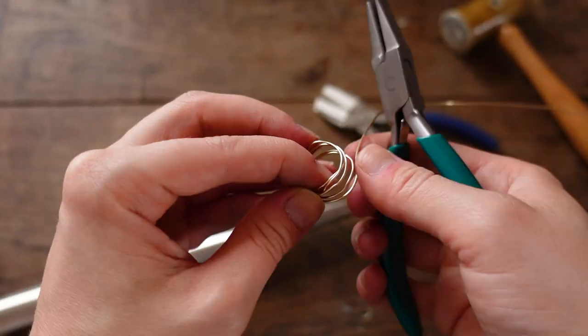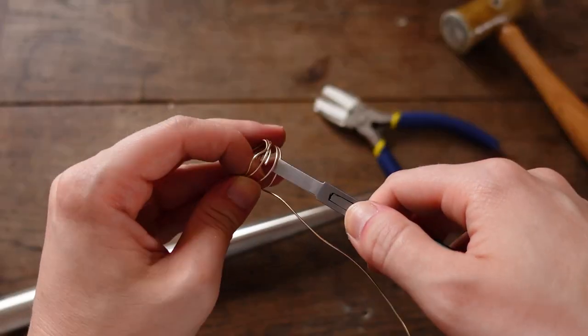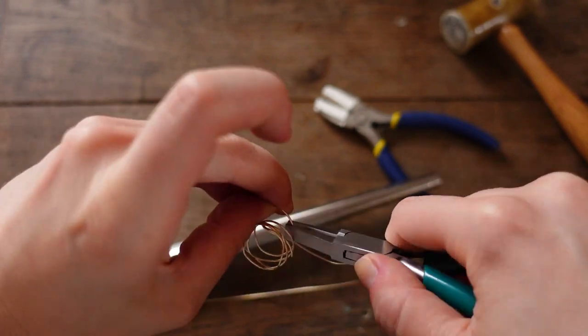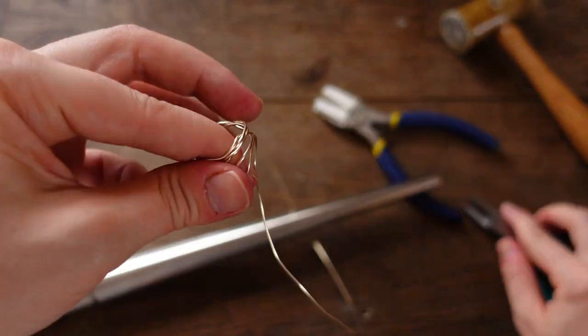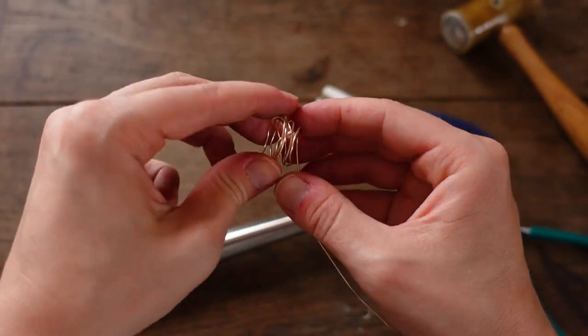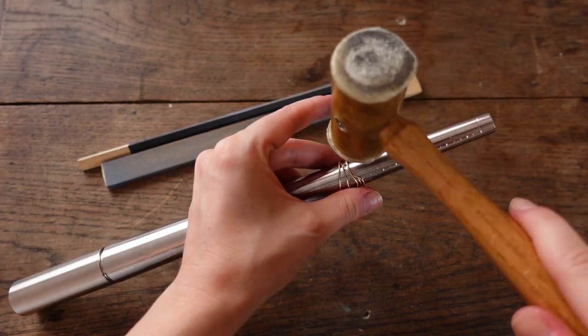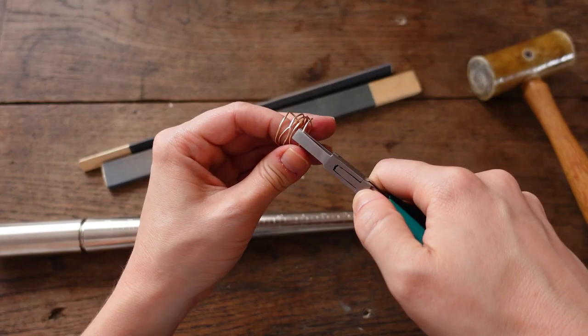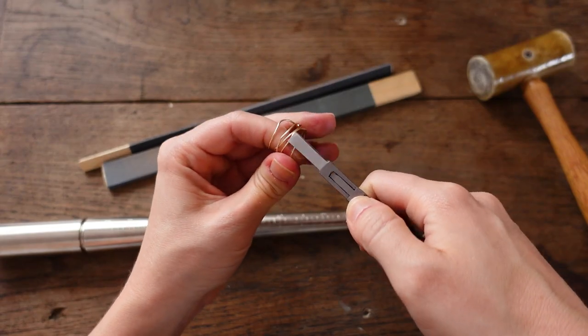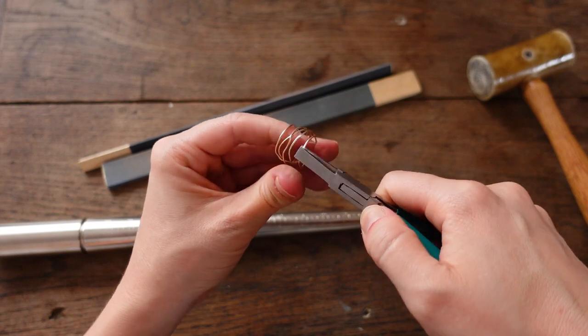Don't worry if the wrap isn't perfect at first. The idea is to create an organic, even a bit messy looking wrap. All you need to do is to make sure that you are wrapping around a slightly smaller size, so when you start shaping the wire, the ring won't become much larger than expected.